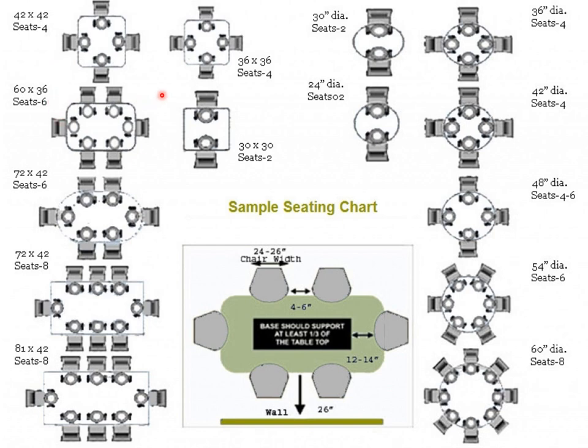In a restaurant, we do not plan only one type of table and seating. We plan different types because guests come in different configurations — a single person, groups of two, groups of four, or more. Furniture arrangement should be flexible enough to cater to the requirements of all guests.